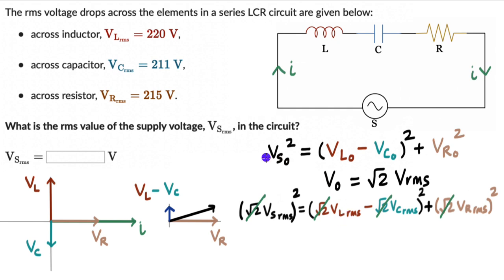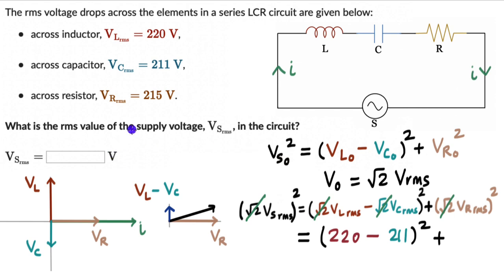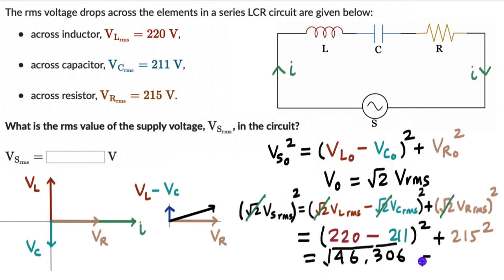Now we just substitute the given values. V_s(RMS) squared equals (V_L(RMS) minus V_C(RMS)) squared plus V_R(RMS) squared, which is (220 minus 211) squared plus (215) squared. This comes out to be 46,306. Taking the square root gives V_s(RMS) equal to approximately 215.2 volts.